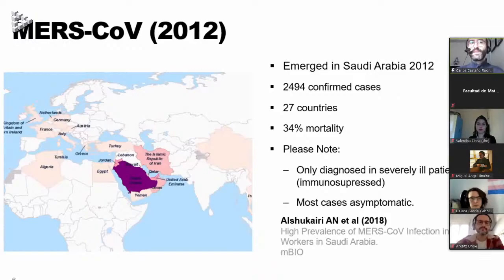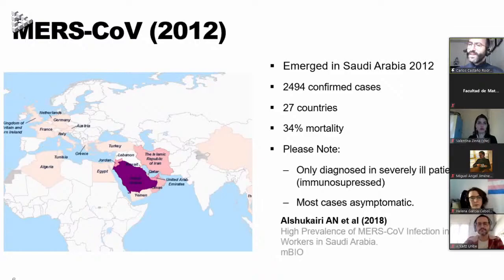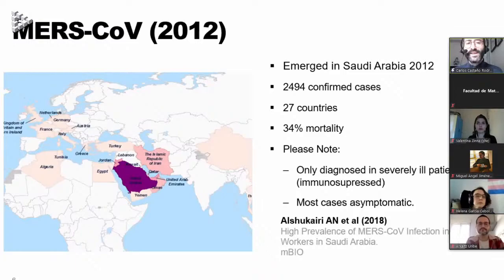Nine years later, Middle East Respiratory Syndrome, or MERS coronavirus, emerged in Saudi Arabia. To date, there are 2,500 confirmed cases in 27 different countries, but most are concentrated in Saudi Arabia. It has a 34% mortality rate, which seems very high. But please note that there are new reports suggesting that many people in Saudi Arabia have antibodies against MERS coronavirus and did not report having any symptoms.